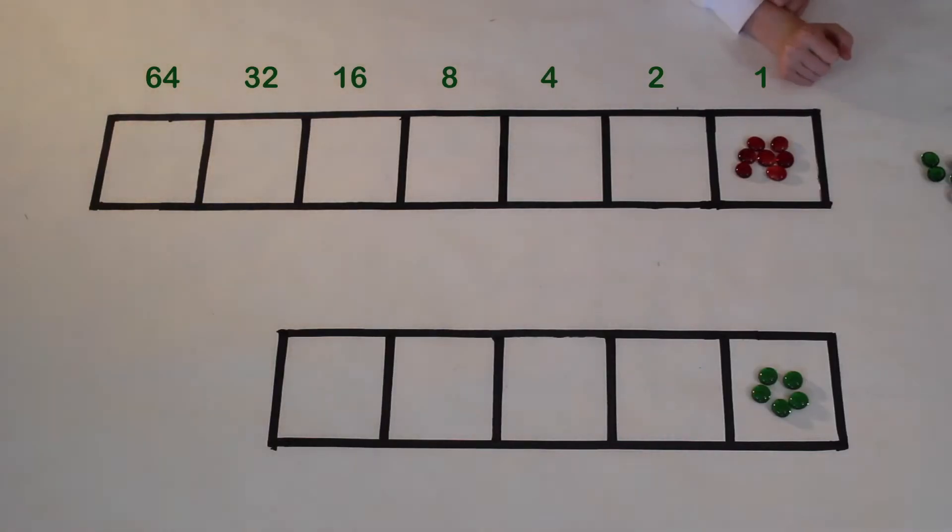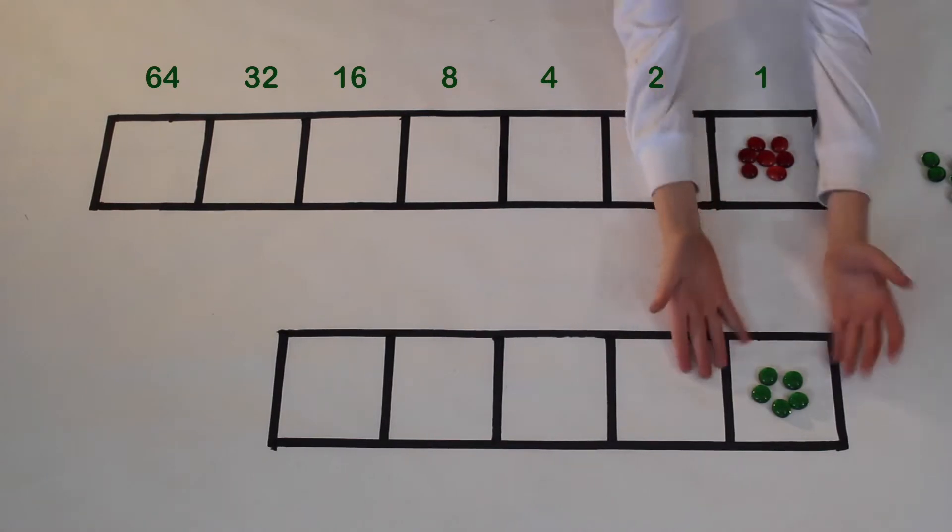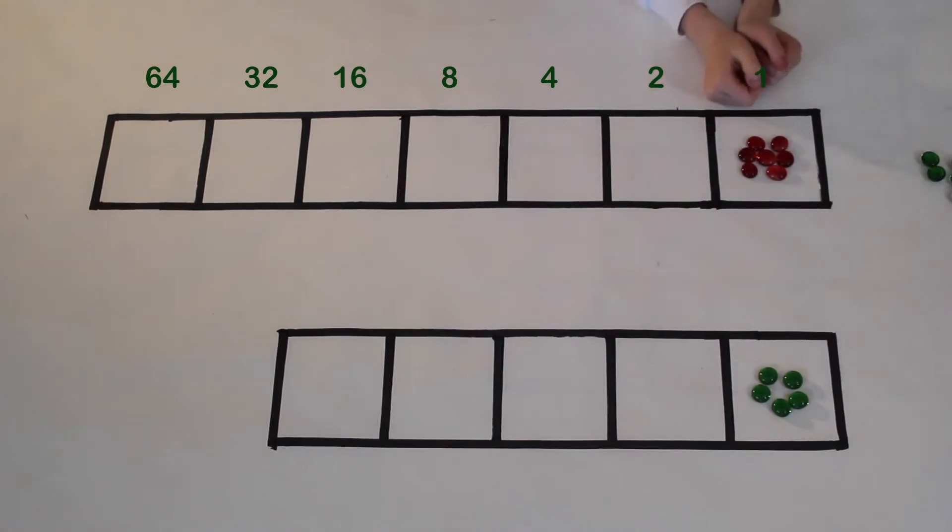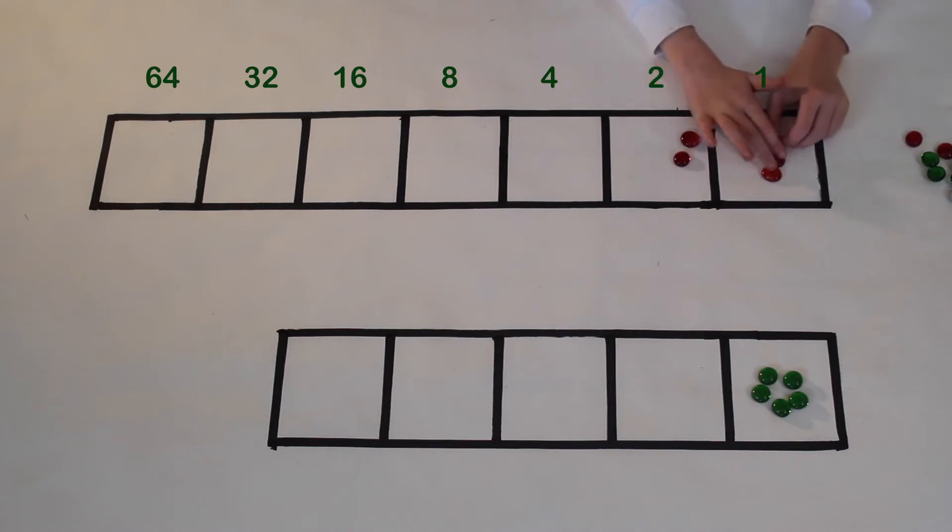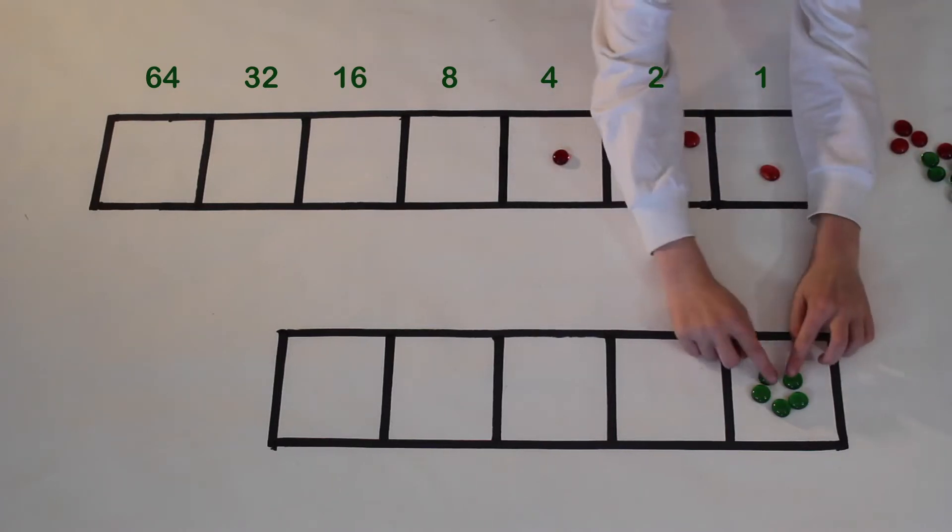All right, so today we are going to multiply 7 by 5, so we need to make base 2 machines for them. We're going to use the same rule as always, two dots on the right go to one dot on the left. We're going to continue this on both sides until we can no longer do it anymore.